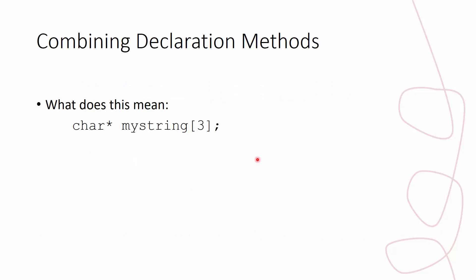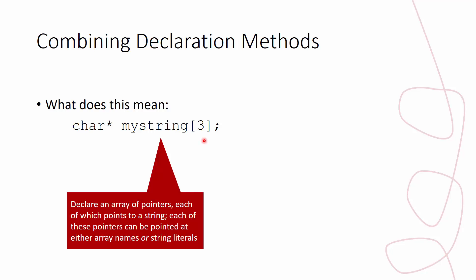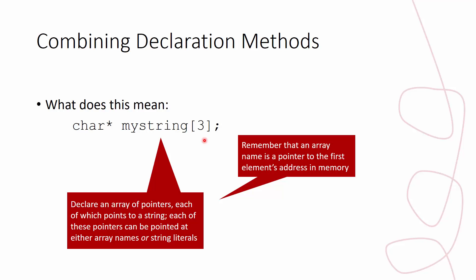If we combine declaration methods — char* myString[3] — what this does is declare an array of pointers, each of which is a pointer to a string. Each of these pointers can be pointed to either array names or string literals. Remember: in C, the name of an array is a pointer to the first element's address in memory.